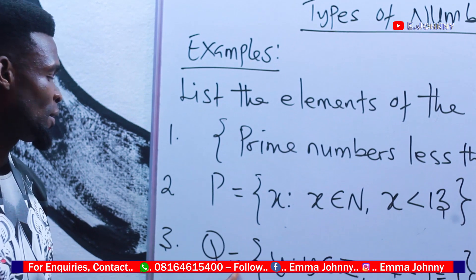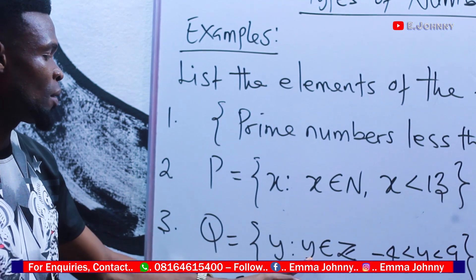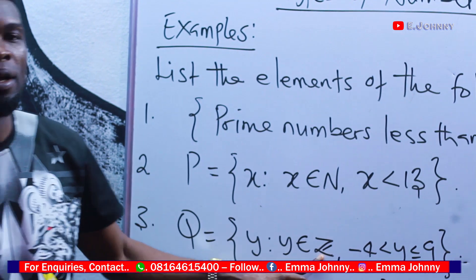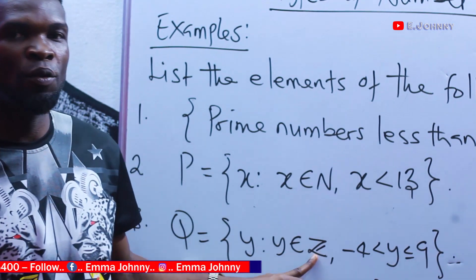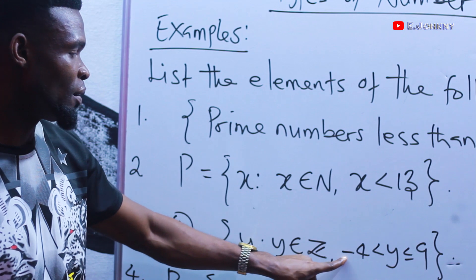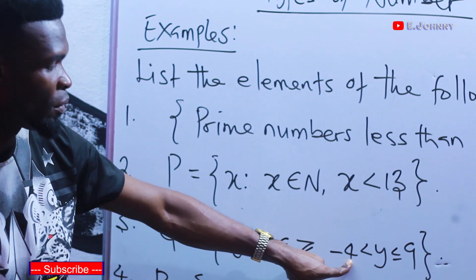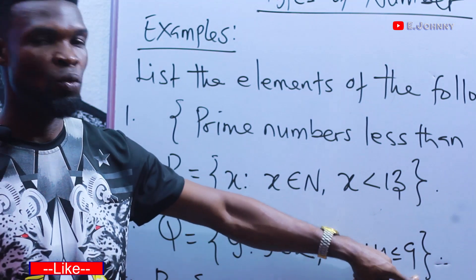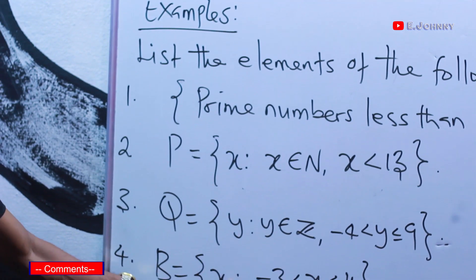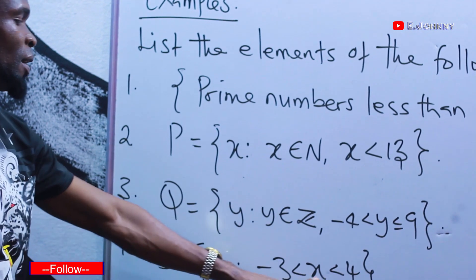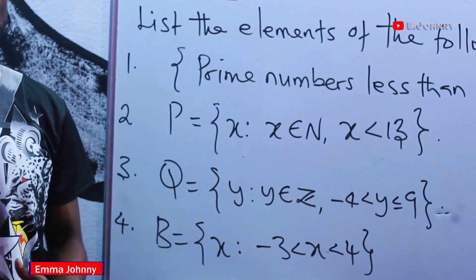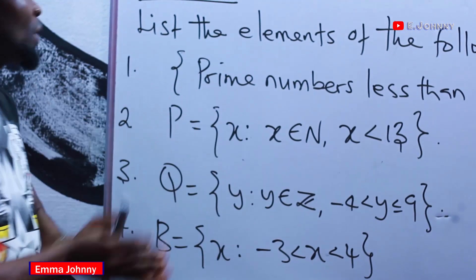Q is a set of y such that y belongs to the set of integers. Integers are positive and negative whole numbers including 0, so here it ranges from minus 4 to 9, which we are going to list. And B is a set of x such that x lies between minus 3 and 4, but neither is inclusive.